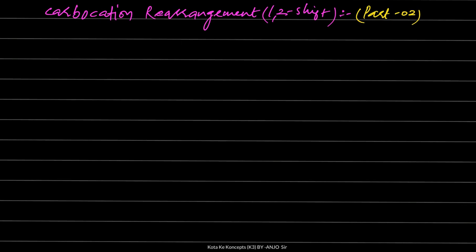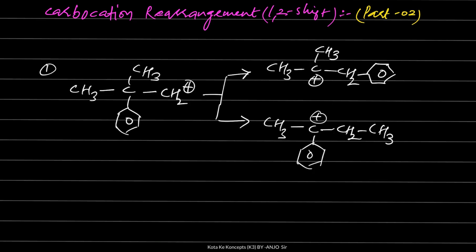Today in this video lecture, we will discuss the carbocation rearrangement of 1,2 shift, part two. In the previous video lecture, we discussed 1,2 shift part one, covering three shifts: hydride shift, alkyl shift, and phenyl shift. Now for 1,2 shift questions, we have two types: first, when alkyl shift competes with phenyl, and second, when phenyl shift competes with phenyl.